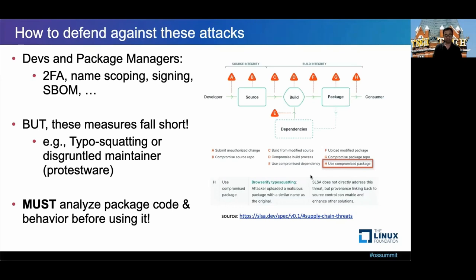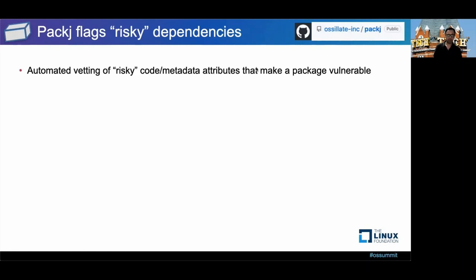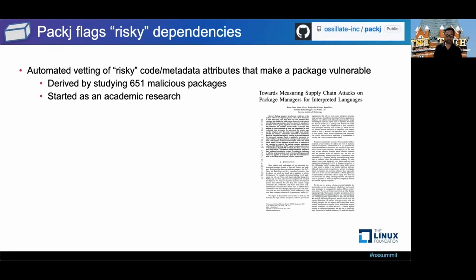Manual vetting can be infeasible because a package can have hundreds of dependencies if you include transitive ones. Which is why we have developed a tool called Package. It can semi-automate your package vetting. Specifically, it looks for risky code and metadata attributes that make a package more vulnerable to supply chain attacks. It carries out static analysis, dynamic analysis, as well as metadata analysis. We derived a set of risky attributes by studying 650 malicious packages discovered in the past by the community.